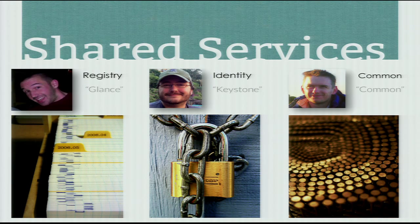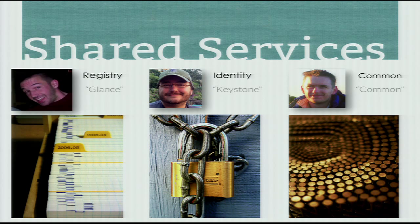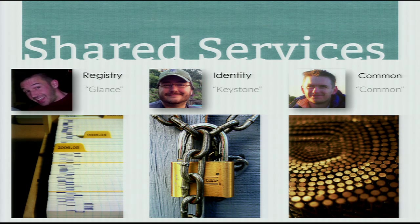Out of those major resources - storage, networking, and compute - there are a number of shared services that the other projects rely on, and these three in particular are in core. Glance is the image registry - essentially if it's launchable, it lives in Glance: disk images, snapshots, etc. The storage is actually not part of Glance; most OpenStack deployments use Swift to store the disk images. Glance manages the registration layer - what format is it in, what hypervisors can it be launched with, etc.